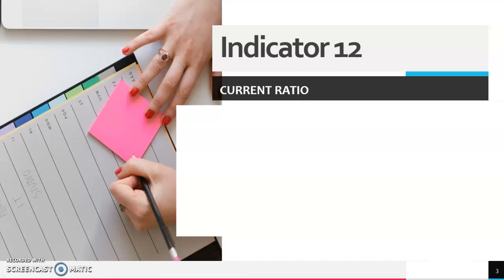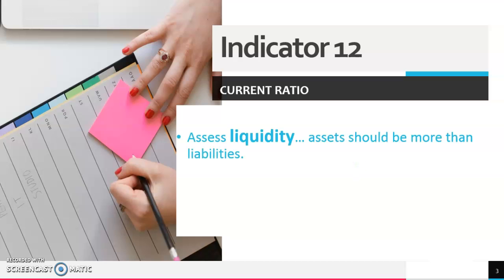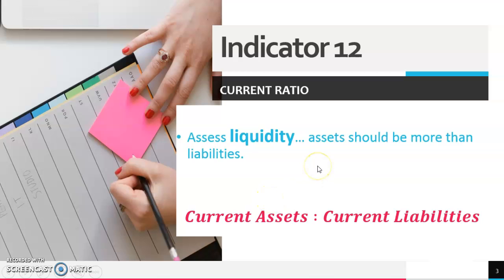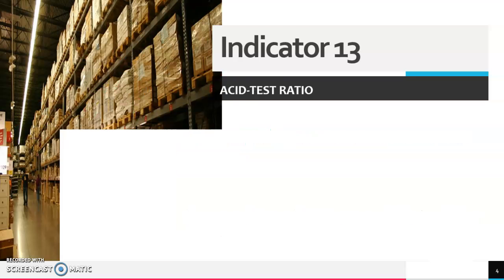Indicator 12 is the current ratio, which we also covered in grade 10. It refers to liquidity — how liquid is your business, meaning cash flow, whether cash is freed up and if you can use it to buy more assets. You take your current assets and compare it with your current liabilities; both amounts are available in your balance sheet under their own headings.